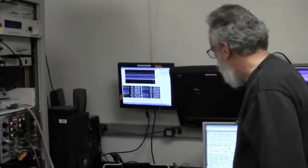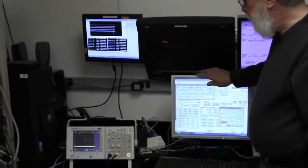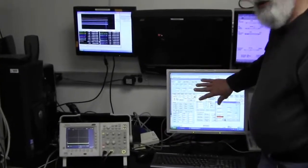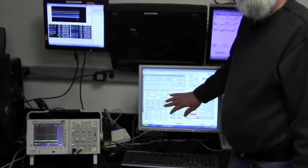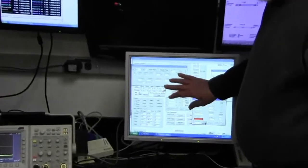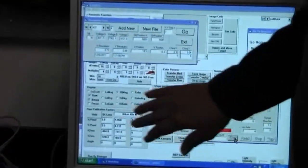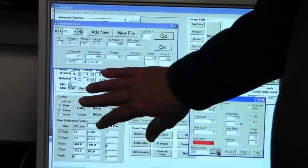We also have the control computer. This is the main control computer. We use this to control the number of counts we get, the position of the stage, the voltages on the lenses, and all of those features that we need to adjust are controlled from here.